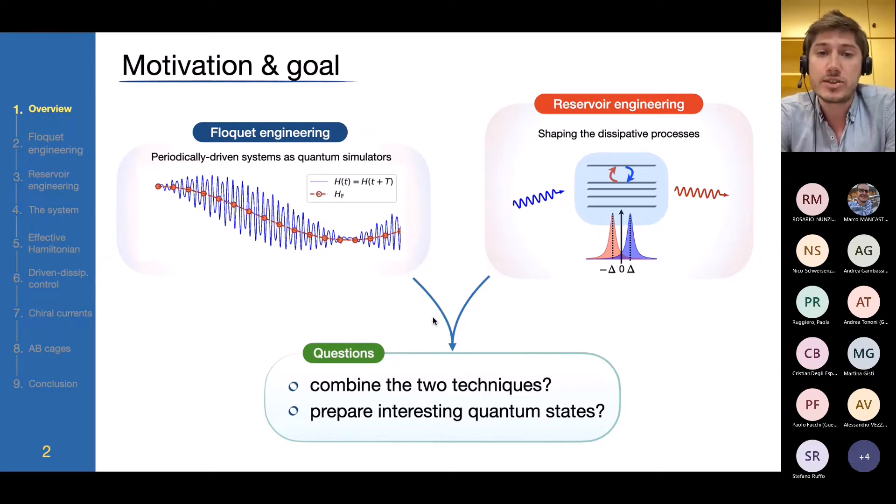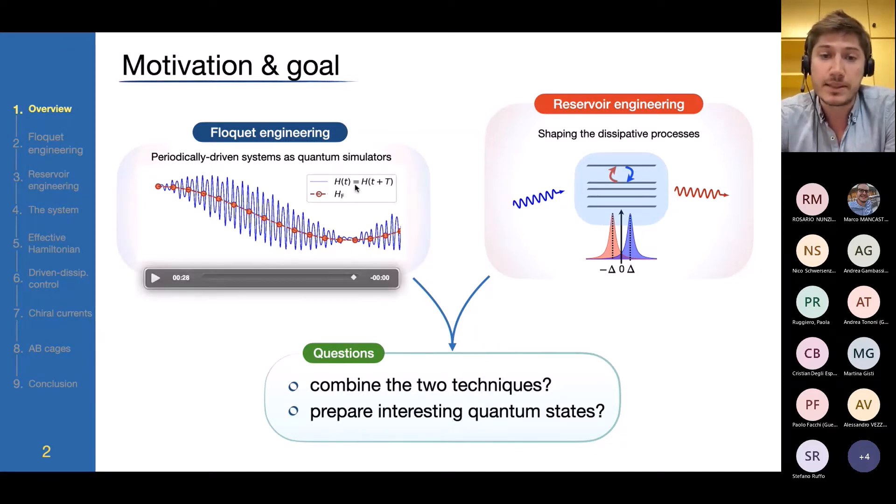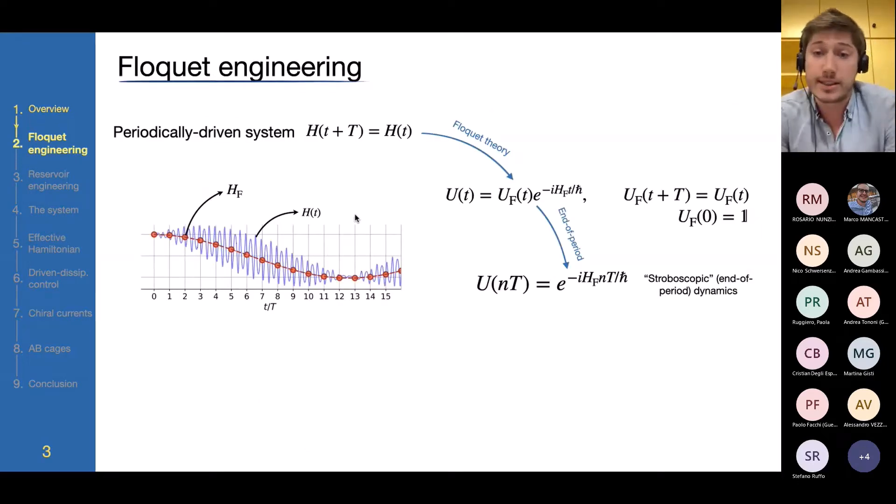Another very interesting idea is that to do so-called reservoir engineering, so to engineer the type of environment that a system feels. The question that I will discuss today will be the following: first of all, can these two techniques be combined together? Can one exploit reservoir engineering at the level of a model that has been simulated through periodic driving? And on the other hand, if this is possible, then can this be used to prepare interesting non-equilibrium quantum states?